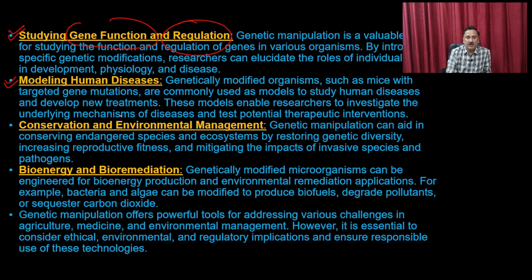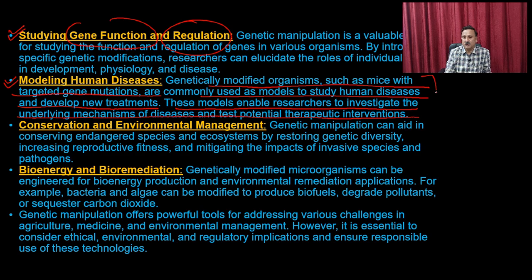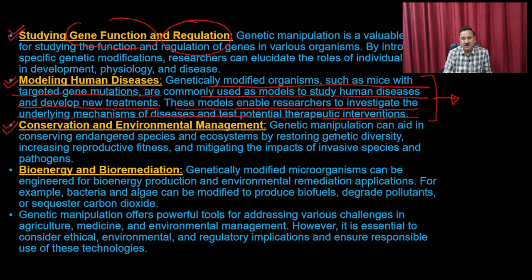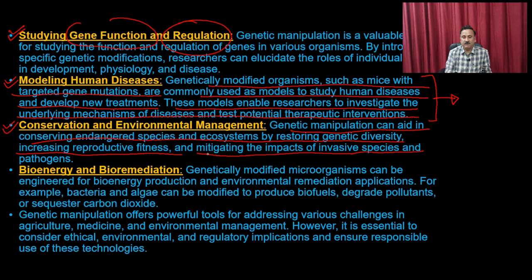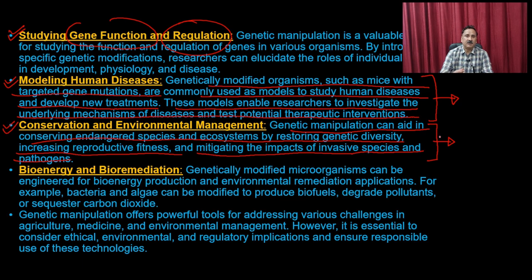You can also develop human disease models. Genetically modified organisms such as mice with targeted gene mutations are commonly used as models to study human diseases and develop new treatments. These models enable researchers to investigate the underlying mechanisms of disease and test potential treatments. We will also discuss this when we talk about transgenic animals at the end of this unit.